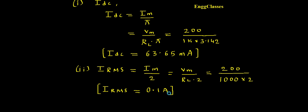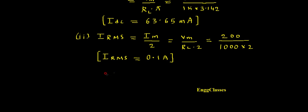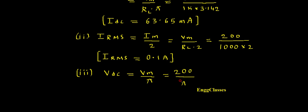The third parameter is the DC output voltage VDC. The direct formula is VDC = VM / π. Substituting VM = 200 V and π = 3.142: VDC = 200 / 3.142 = 63.65 volts. This is the third parameter found.